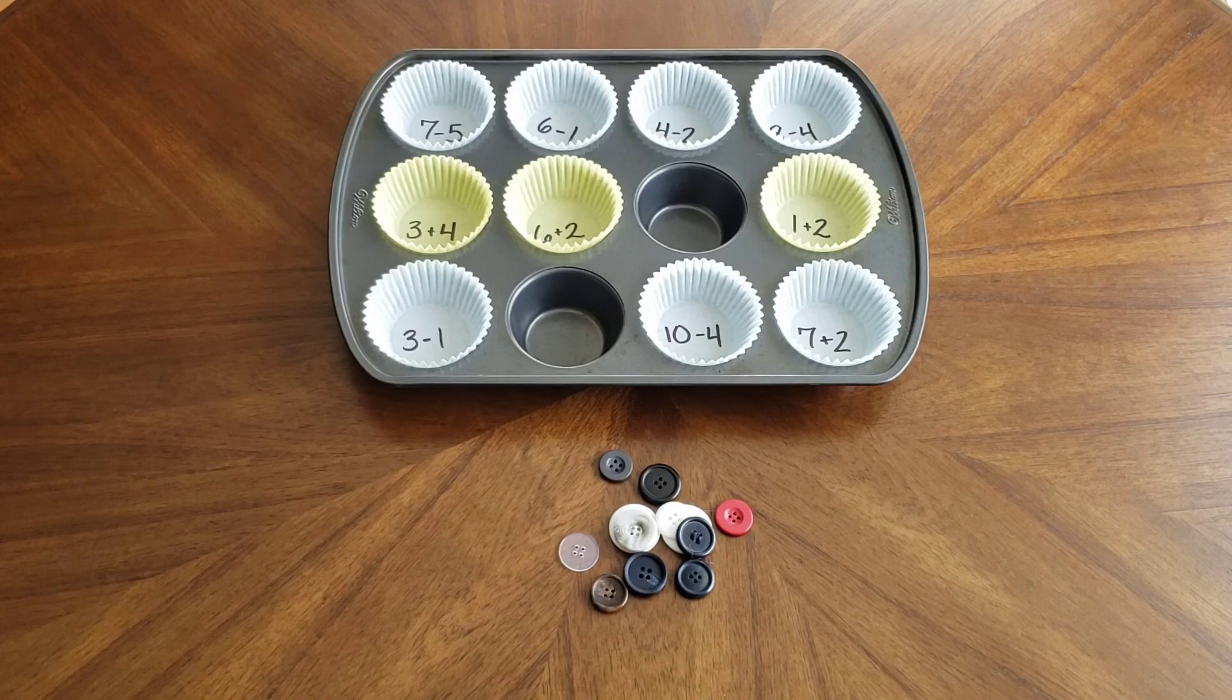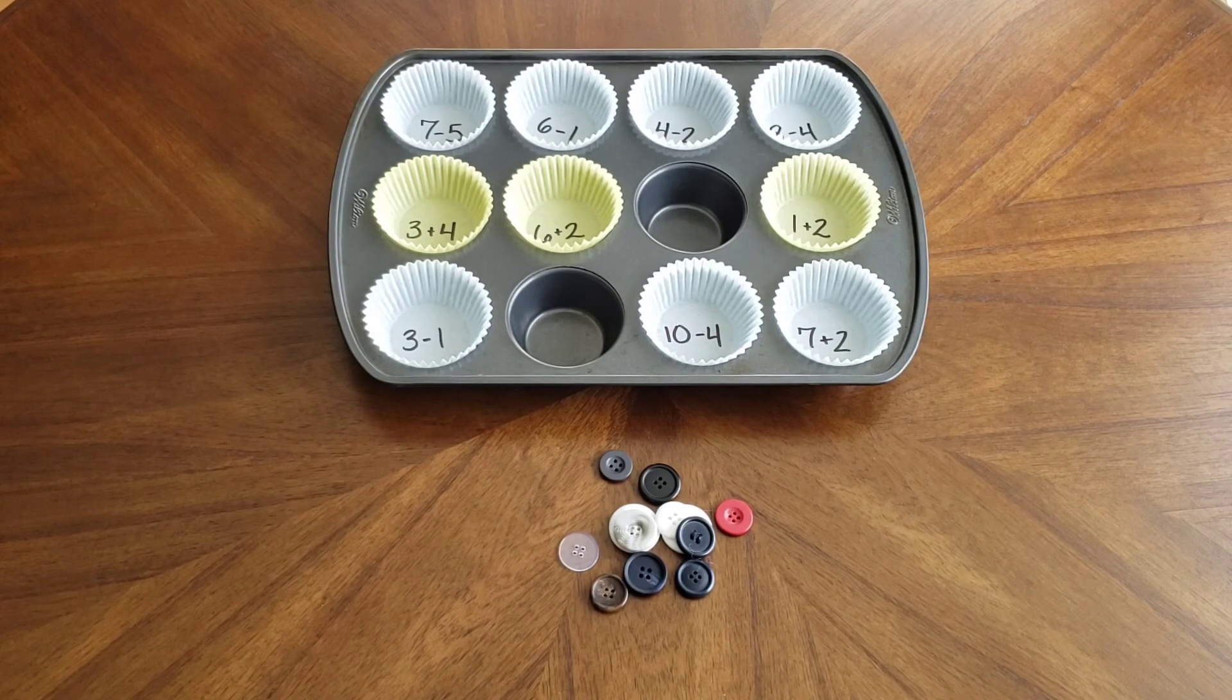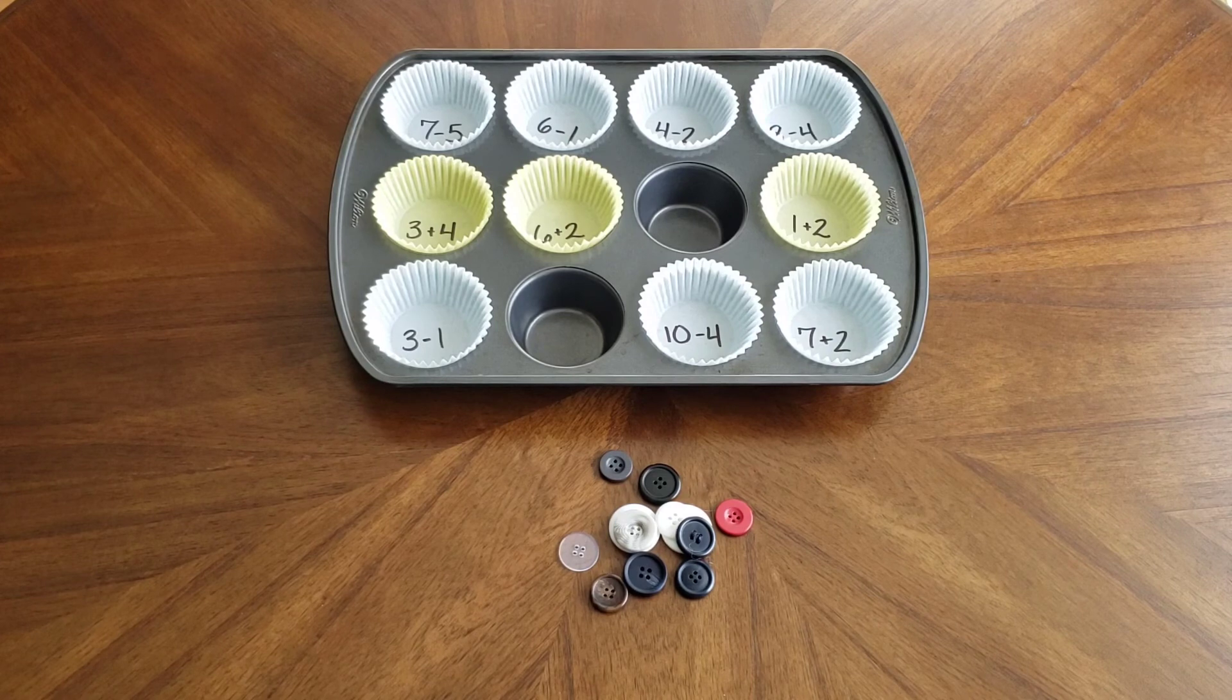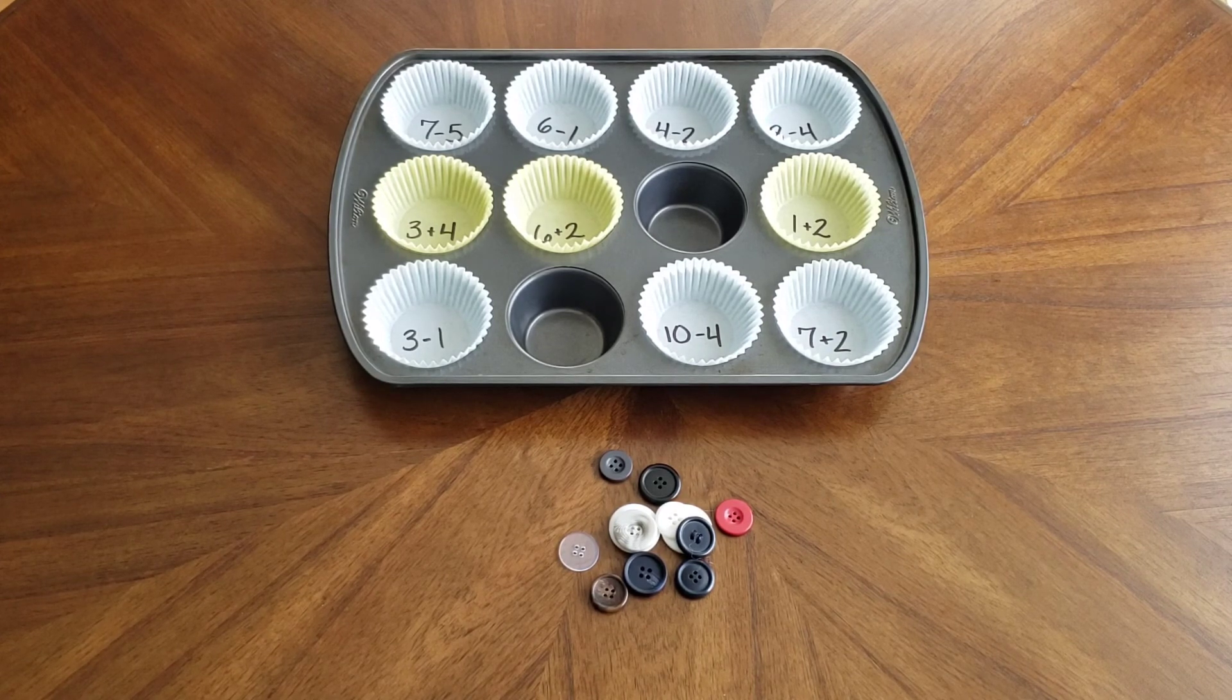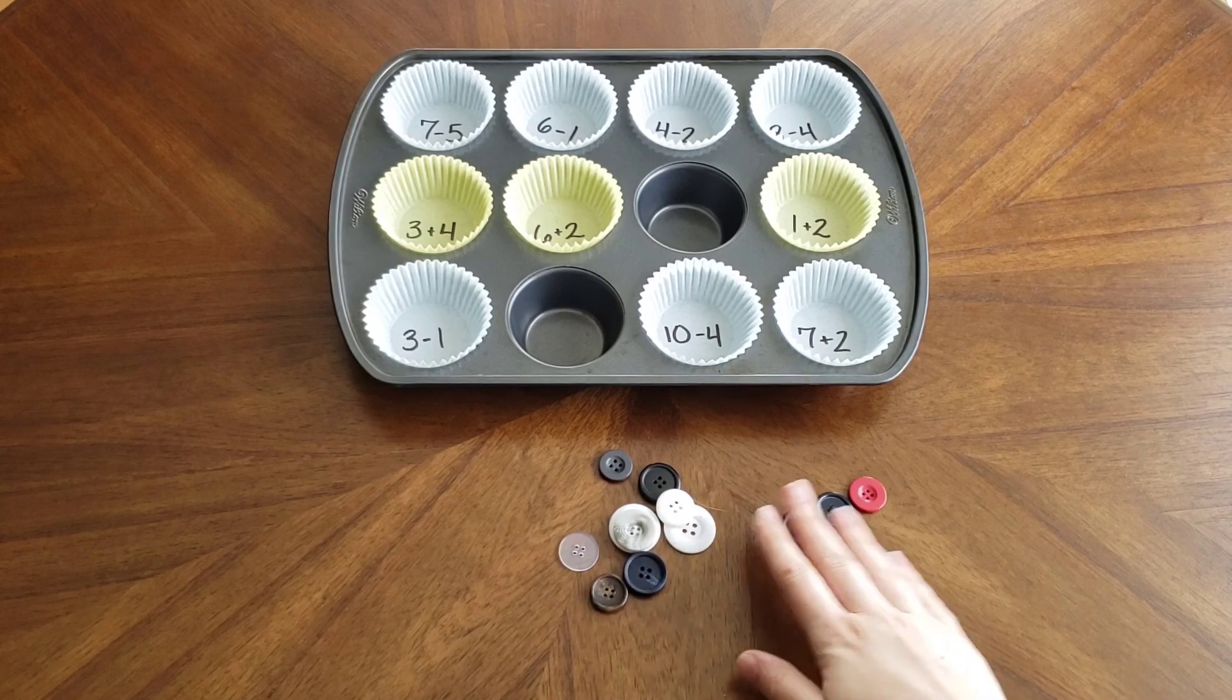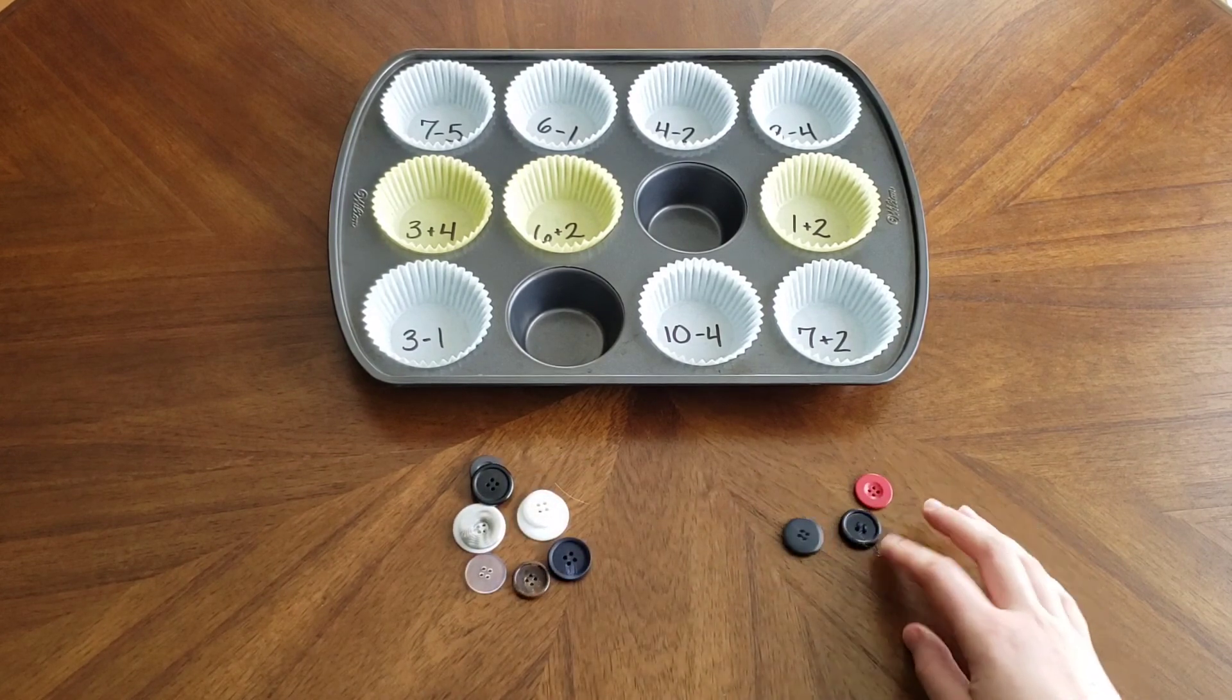If you're working on number recognition with younger children, you can also have them count out an object that corresponds to the number that you wrote. So they would have to look at the number, say the number out loud, and then count out whatever that number is.